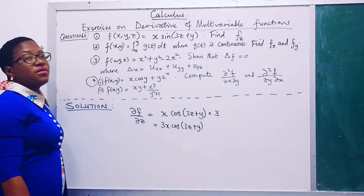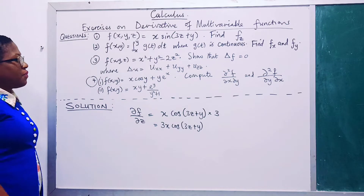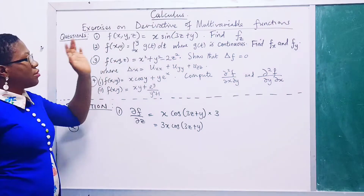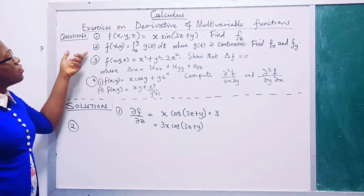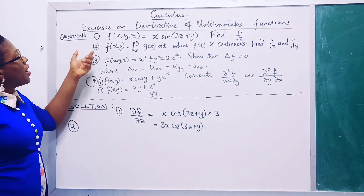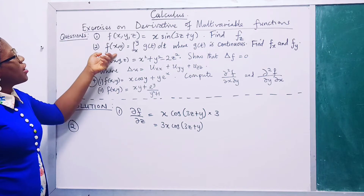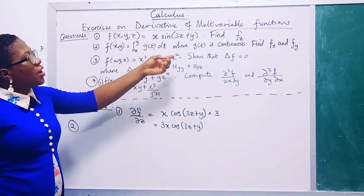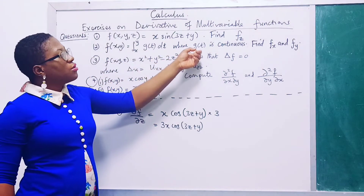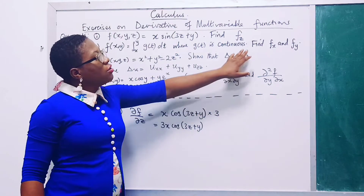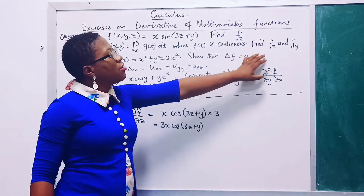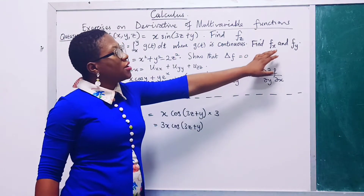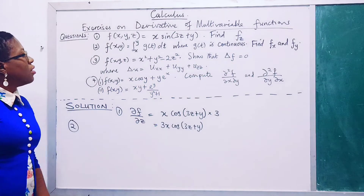That's all for number one. For number two, we have f(x, y) as an integral of a function where g is continuous. We are going to find the partial derivative with respect to x and the partial derivative with respect to y.